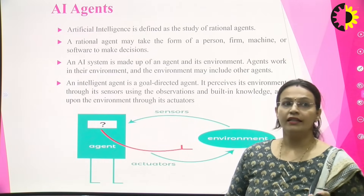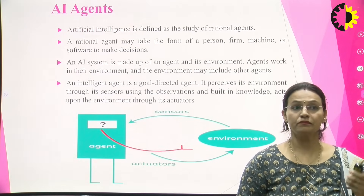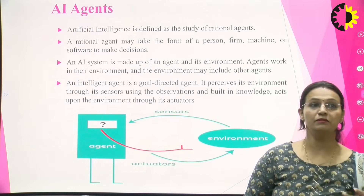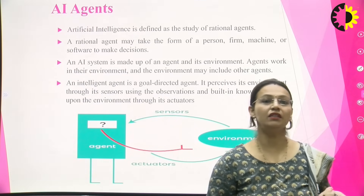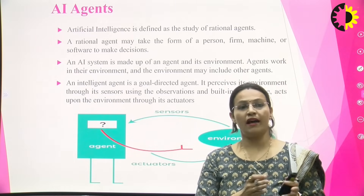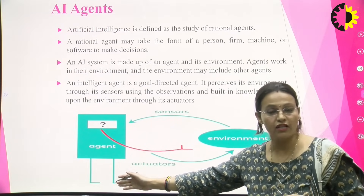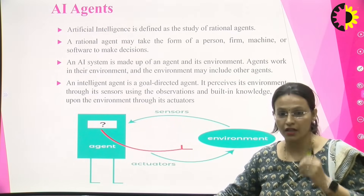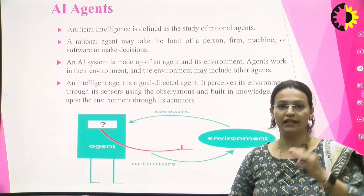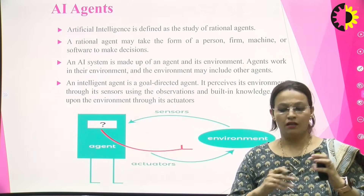What is an AI agent? Basically it is a rational agent. This rational agent in a machine can take the form of any person, firm, machine, or software, and it is basically used to make decisions. In that AI system, the agent must have an environment. As depicted in the picture, there is an agent — this agent could be a machine agent or a human agent. As a human, I have an environment that I am surrounded with — people, trees, surroundings.